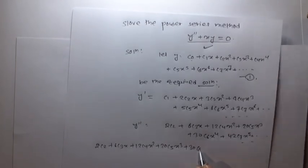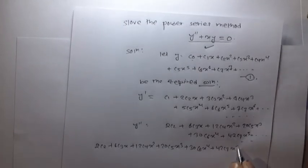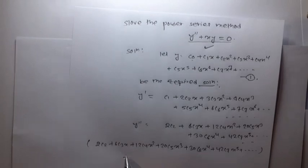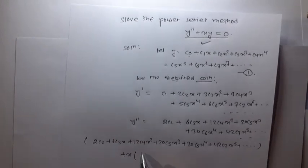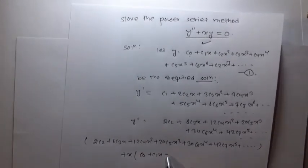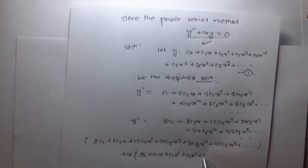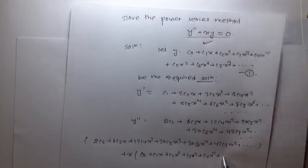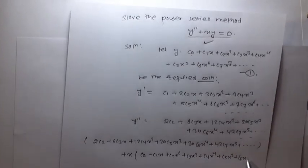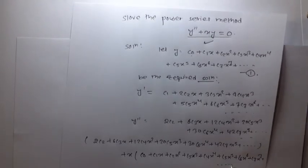Now substituting y double dash plus x times y equals 0: we have 2c2 plus 6c3x plus 12c4x squared plus 20c5x cubed plus 30c6x to the 4th plus 42c7x to the 5th plus dot dot dot, plus x times (c0 plus c1x plus c2x squared plus c3x cubed plus c4x to the 4th plus c5x to the 5th plus c6x to the 6th plus c7x to the 7th plus dot dot dot).